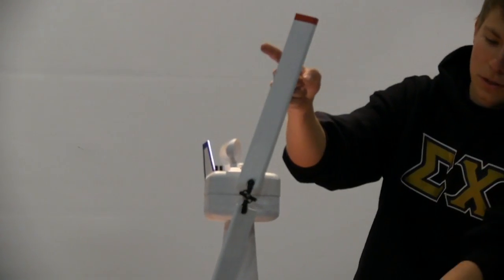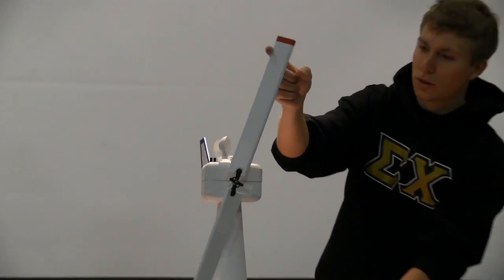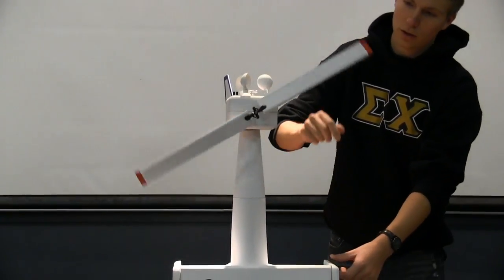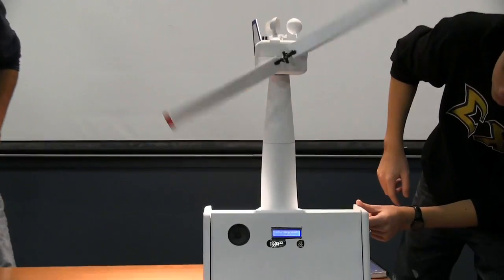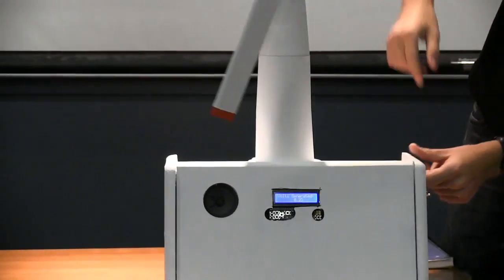And while the prop is spinning, you can see on the LCD screen, it will actually show right now it's going from zero. It looks like we hit maybe one volt with that spin. About 1.2 is the highest on that one.